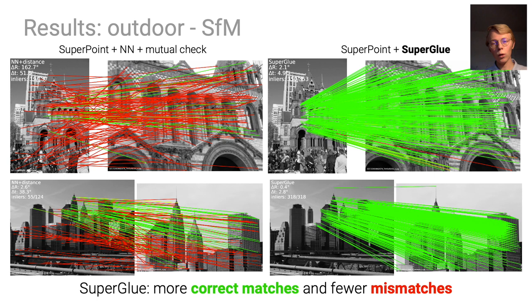We also train SuperGlue for outdoor scenes by leveraging large-scale structure-from-motion reconstructions. We observe the same striking superiority to classical and learned baselines.